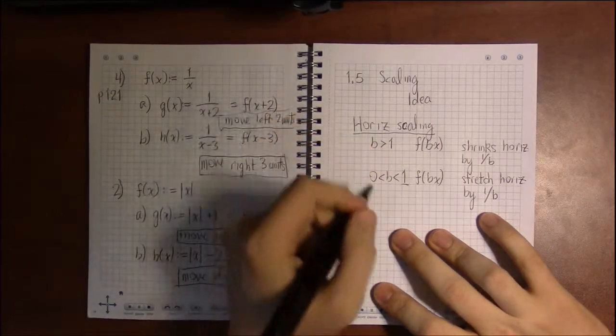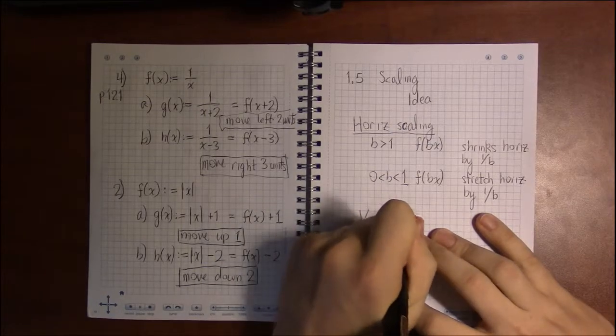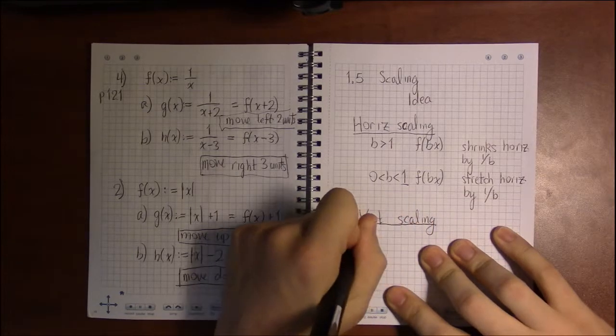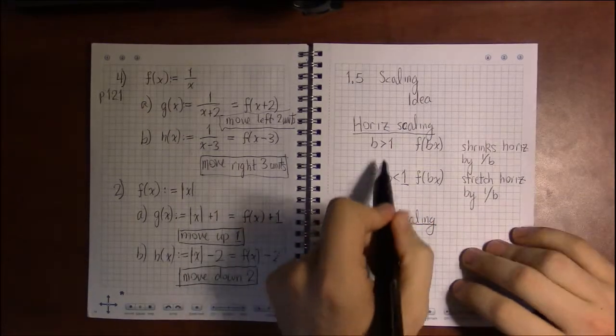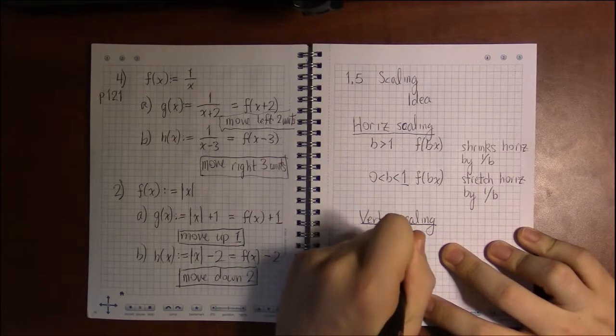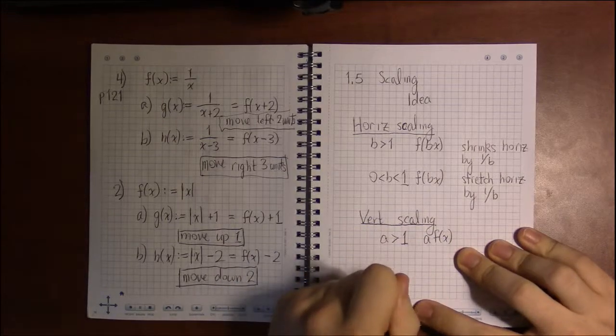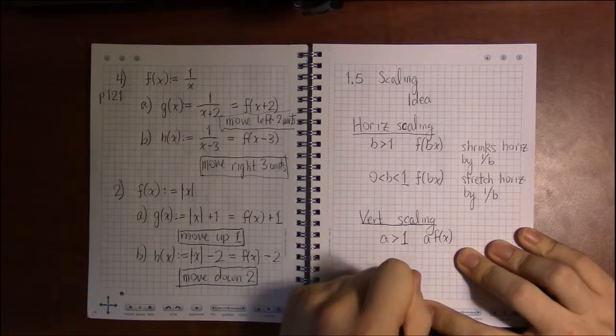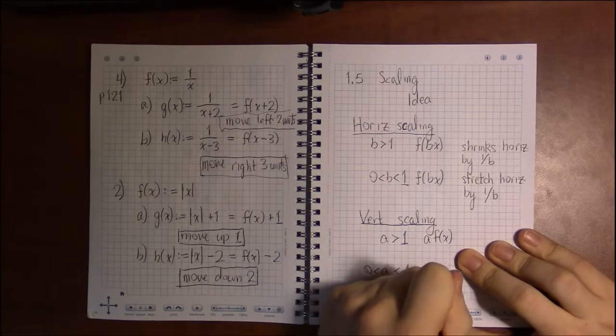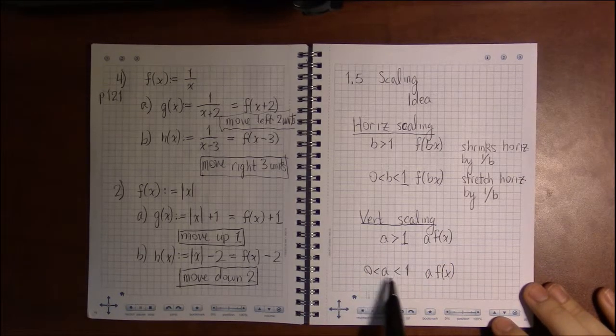Each transformation comes in a horizontal and vertical flavor. So once again, we have these two conditions where we could be stretching or we could be shrinking depending upon whether the factor we're multiplying by is greater than 1 or between 0 and 1.